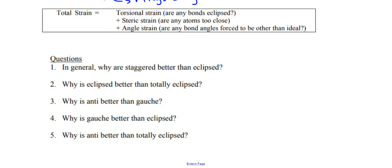So let's just try to answer a few of these questions on the bottom. In general, why are staggered better than eclipsed? Well, we would answer in terms of strain because there is less torsional strain, period. Staggered would look something like this, while eclipsed, I take the same idea, the other one would be right in front of it. So that is the definition of torsional strain.